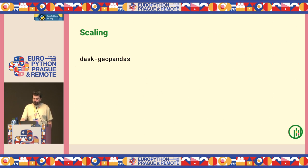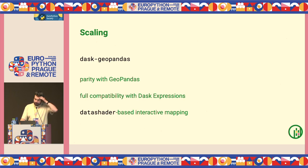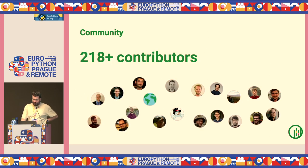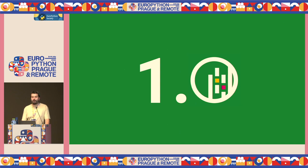We're also doing work on scaling within the DaskGeoPandas project — it's lagging behind, so we want to get parity and full compatibility with the Dask expression engine, plus interactive mapping based on Datashader. These have different branches somewhere but aren't finished. I'm standing here as one of the maintainers, but we couldn't do this without a vast number of contributors — over 200 code contributors over the years, and hundreds more reporting bugs, writing tutorials, and everything else. We thank them all, thank NumFocus for support, and thank EuroPython for the space.